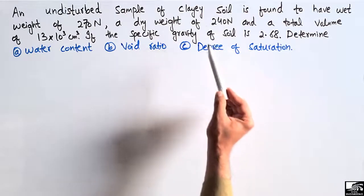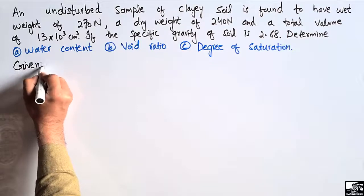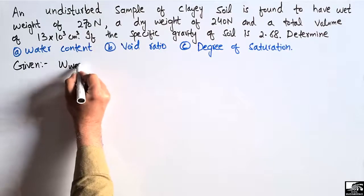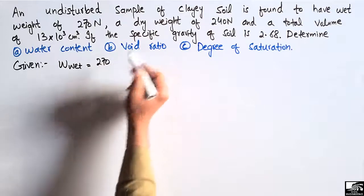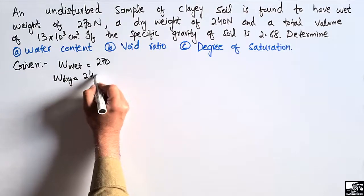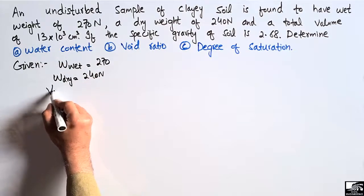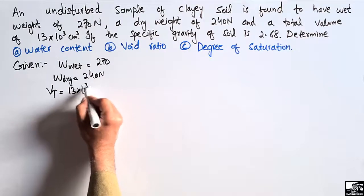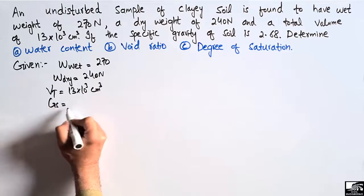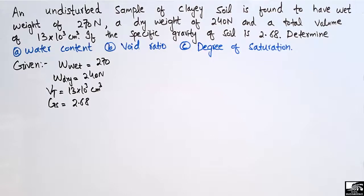The given data for this problem: the wet weight of the soil is 270 Newton, the dry weight of the soil is 240 Newton, the total volume of the clay soil is 13 × 10³ cubic centimeters, and the specific gravity of the soil is 2.68. First, we have to find out the water content.